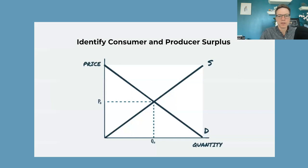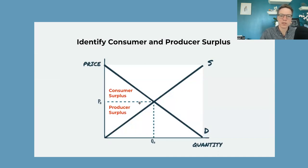Here are all the answers and some more practice at the market level. What does consumer surplus look like at the market level? It's the triangle from the willingness to pay down to the price. What is producer surplus at the market level? It's from the supply curve — which represents cost — up to what they sell for, the price.